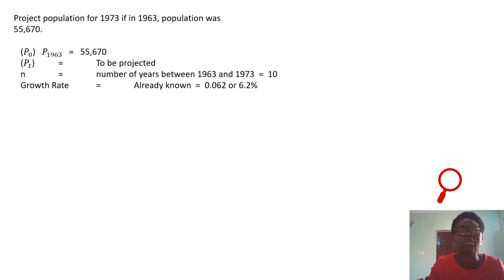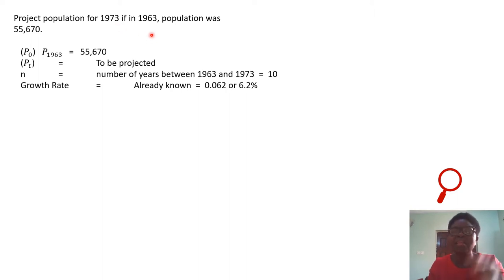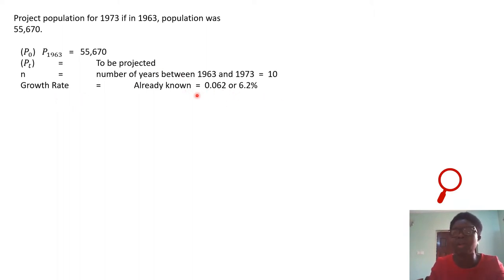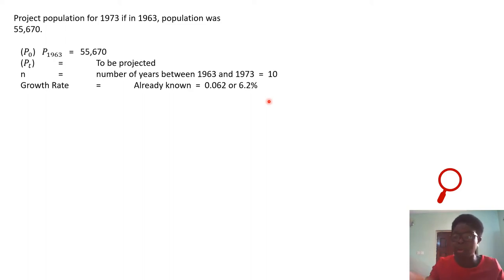Now, project the population for 1973, given that the 1963 population was 55,670. We know the base year is 1963 with a population of 55,670, and we want to know what it will be 10 years later. To project, you need the number of years — between 1963 and 1973 that is 10 years — and we already have our growth rate of 6.2%. So we can now use it to project.